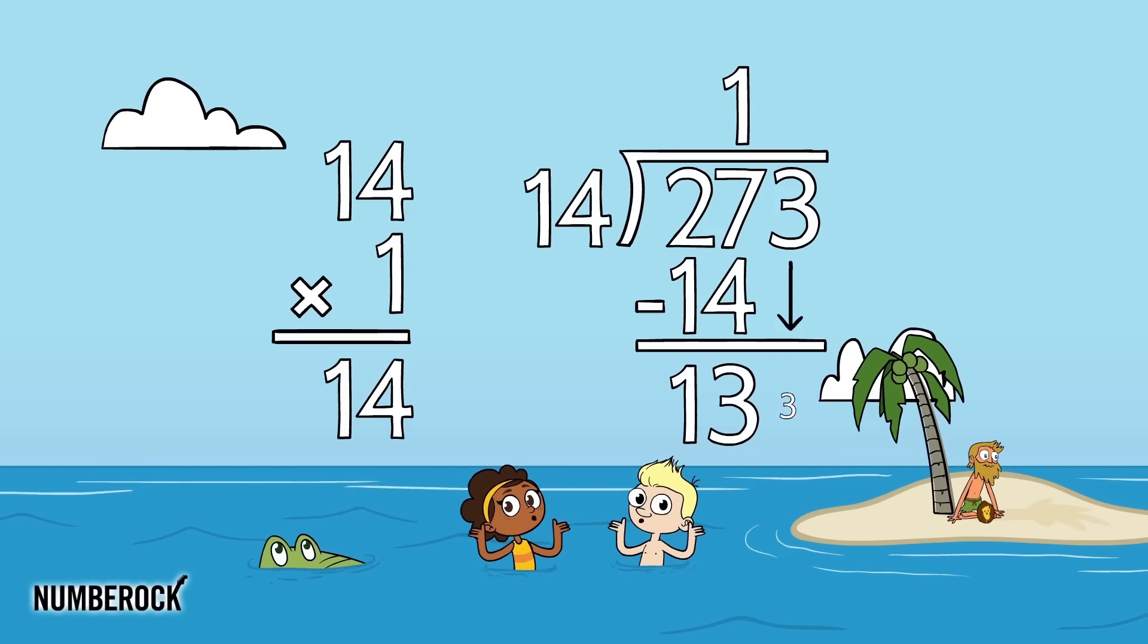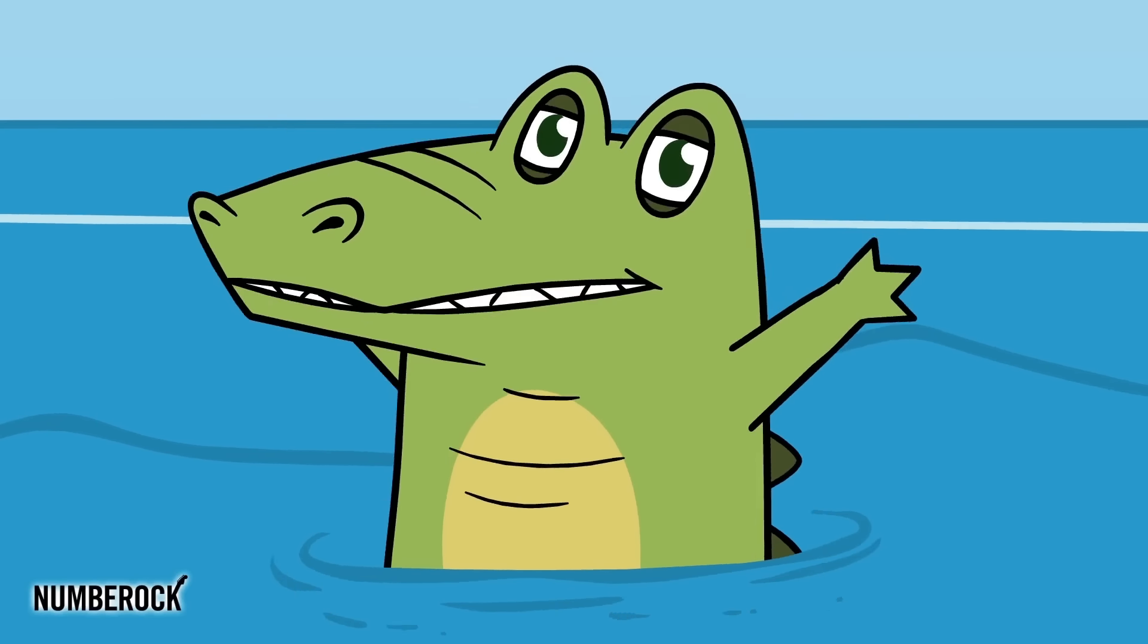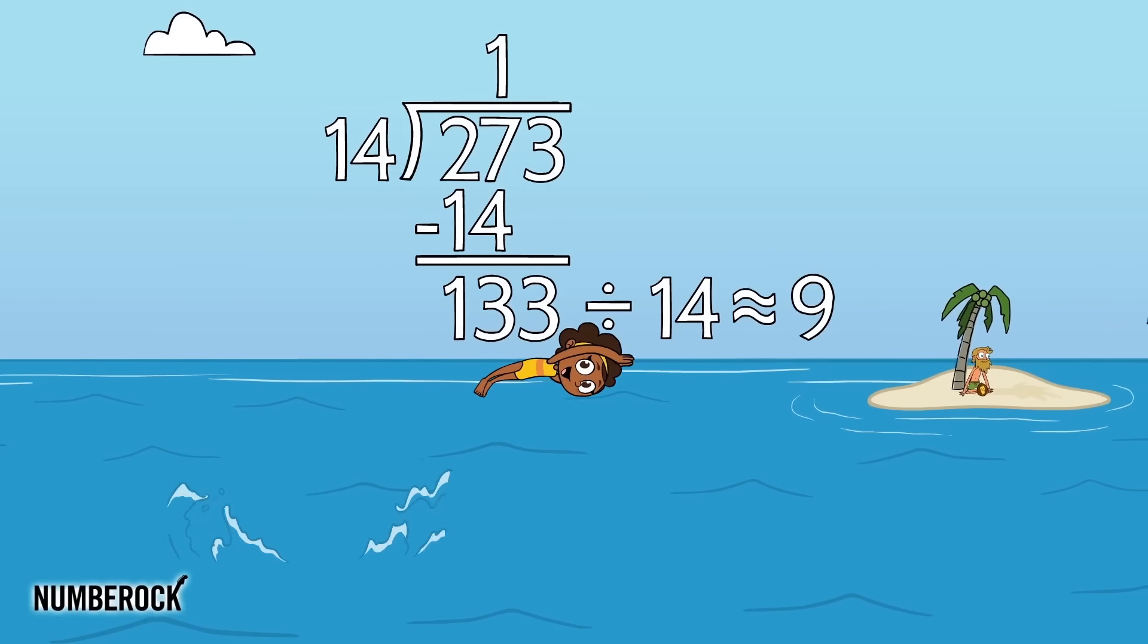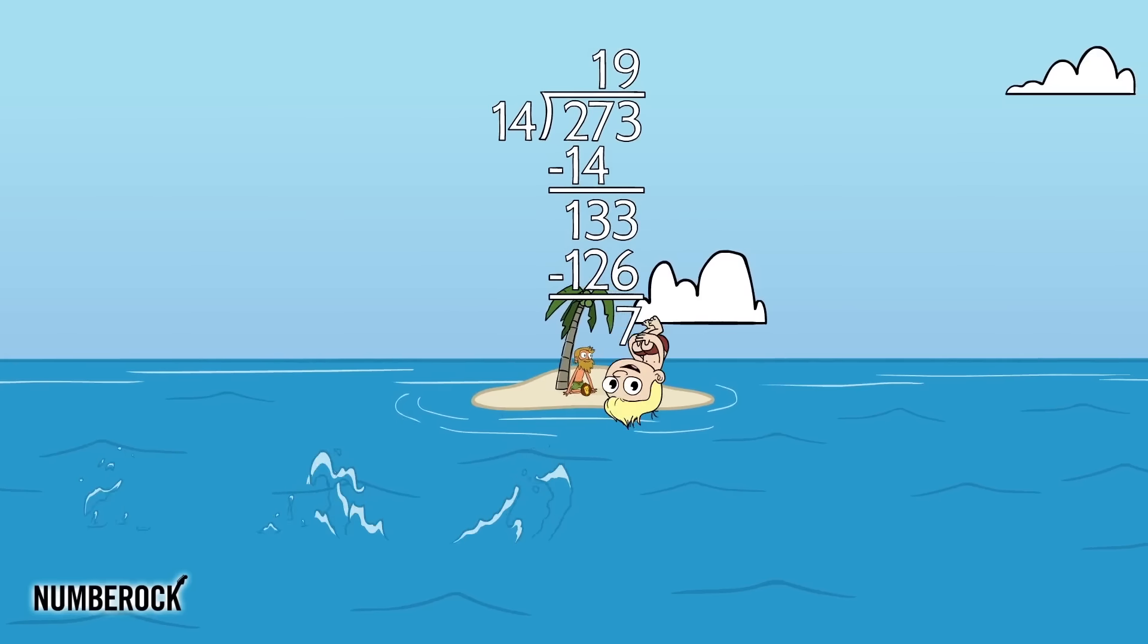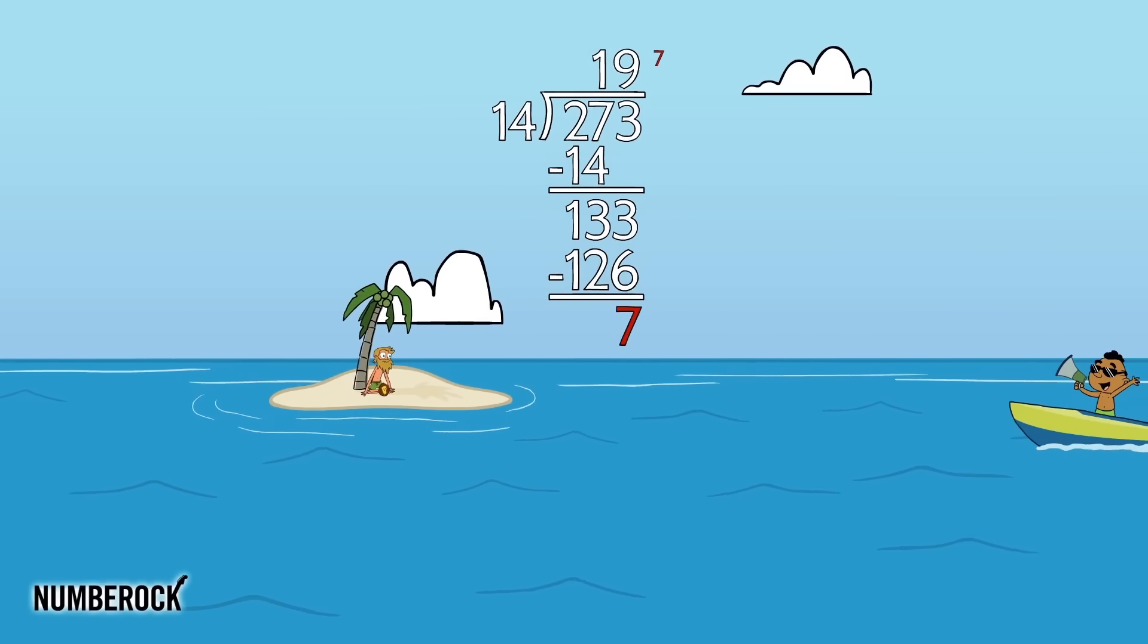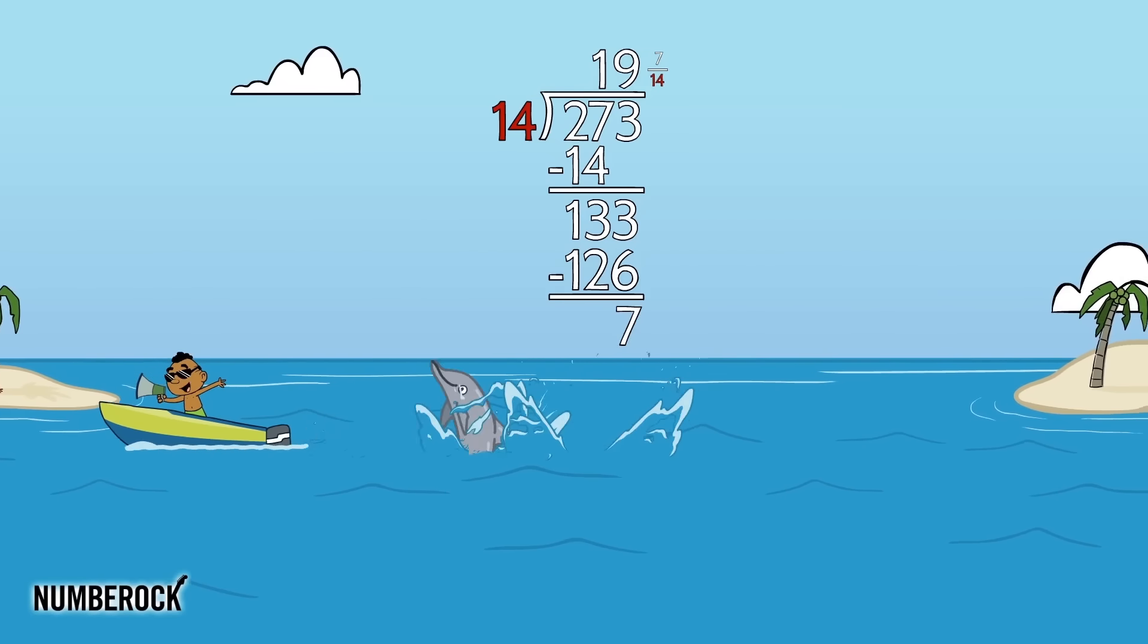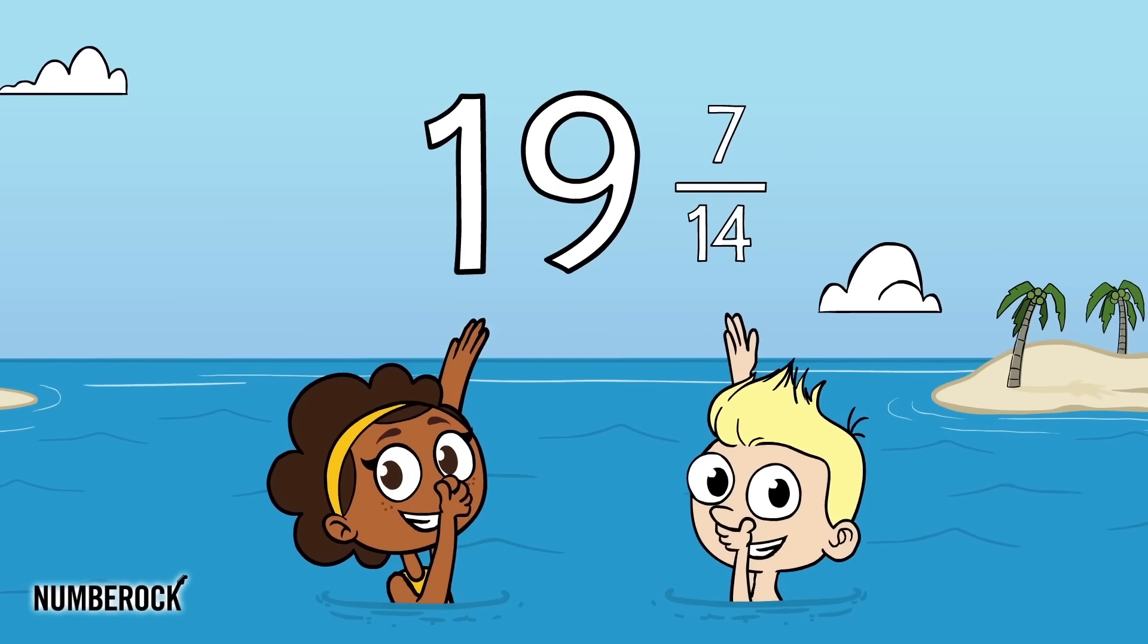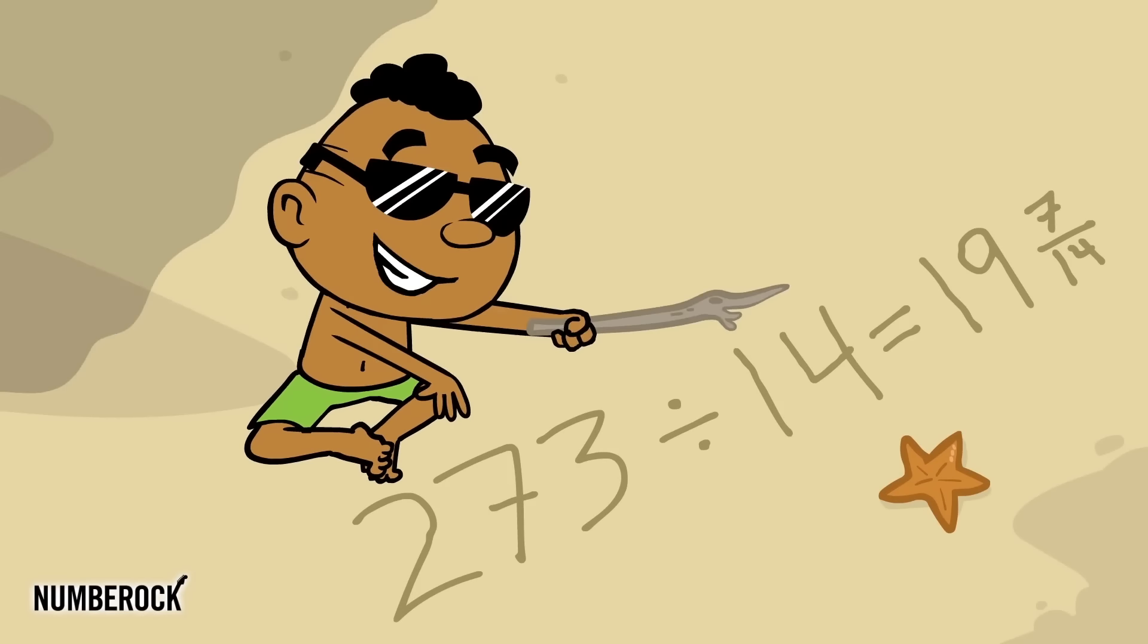Divide, multiply, subtract, bring down. The remainder can become the numerator, the divisor can become the denominator. That's how a quotient is found.